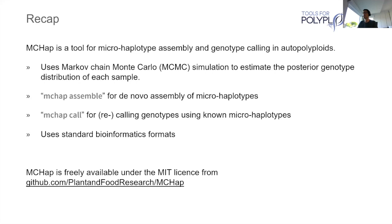The tool uses Markov Chain Monte Carlo simulation. This is a reasonably computationally intensive way of doing haplotype assembly, but it has nice properties and gives us a lot of metadata about the quality of a genotype call. A real focus of MCHAP is to use bioinformatic formats as much as possible. The tool is available online under the MIT license, so it's very freely available for any use.